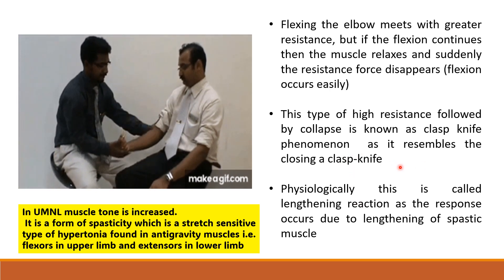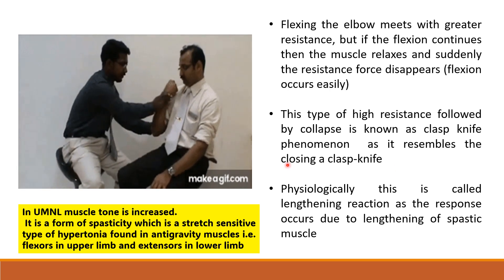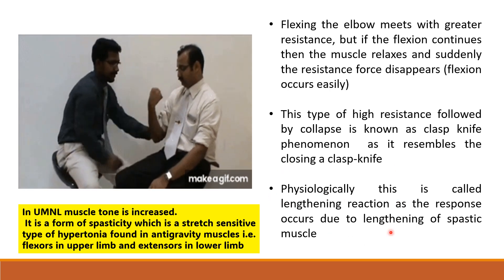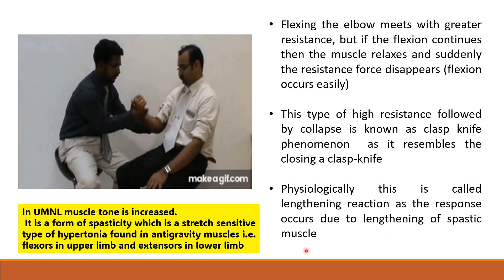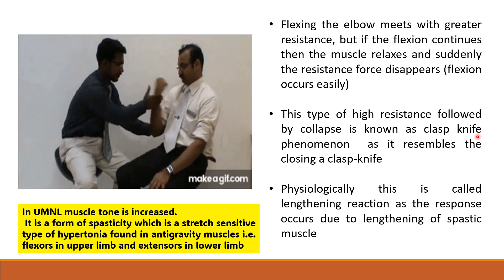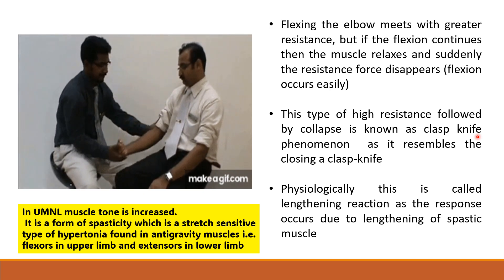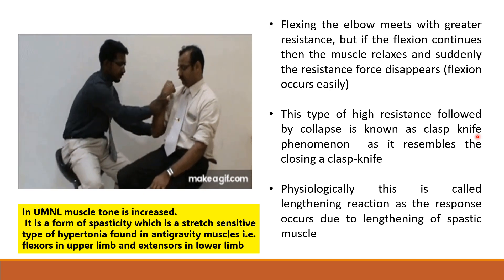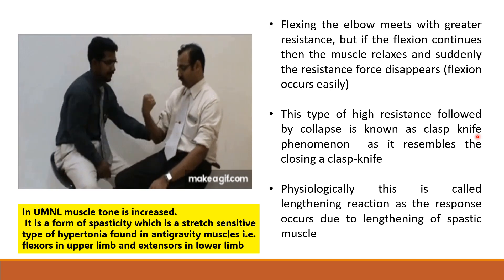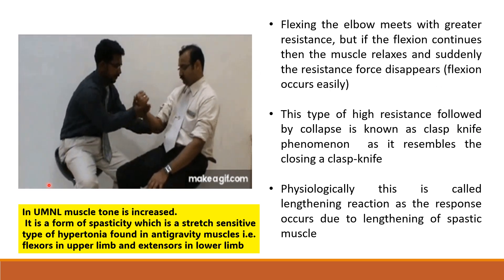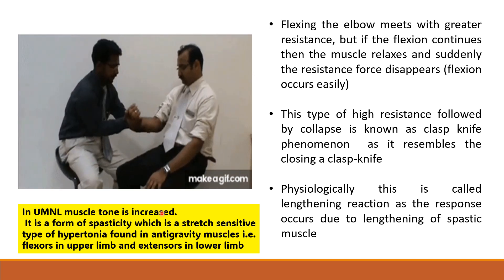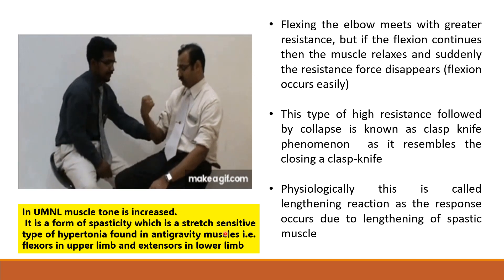Physiologically, this is called the lengthening reaction, as the response occurs due to lengthening of the spastic muscle. This specific type of spasticity is seen in upper motor neuron palsy. In that case there will be hypertonia of the muscle — in upper motor neuron lesion there will be hypertonia and stretch-sensitive hypertonia.